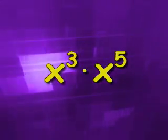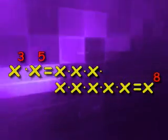Let's take the example of x to the third times x to the fifth. Remember, x to the third means x times x times x, and x to the fifth means x times x times x times x times x. So x to the third times x to the fifth is really x times x times x times x times x times x, which is x to the eighth. Notice that since the exponents tell you how many times x is a factor, when we add 3 and 5 together, we get the number of times x is a factor in our product.